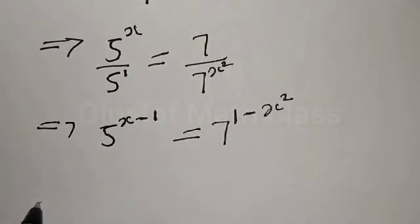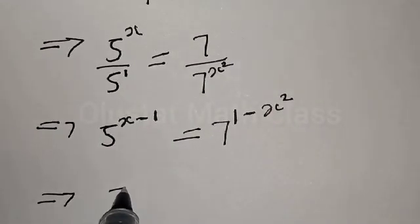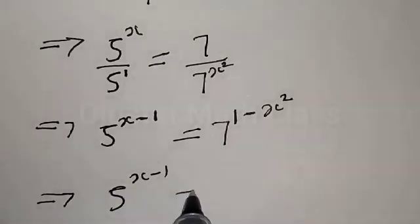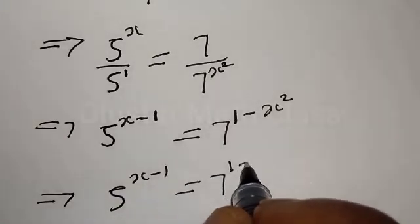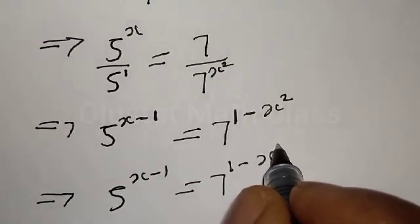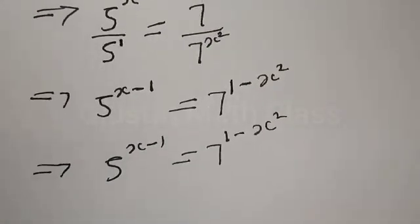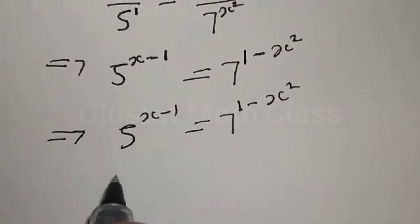This implies that we have 5 raised to power 1 minus x squared. This implies that we have 5 raised to power x minus 1 to be equal to 7 raised to power 1 minus x squared. Let's take the log of both sides.